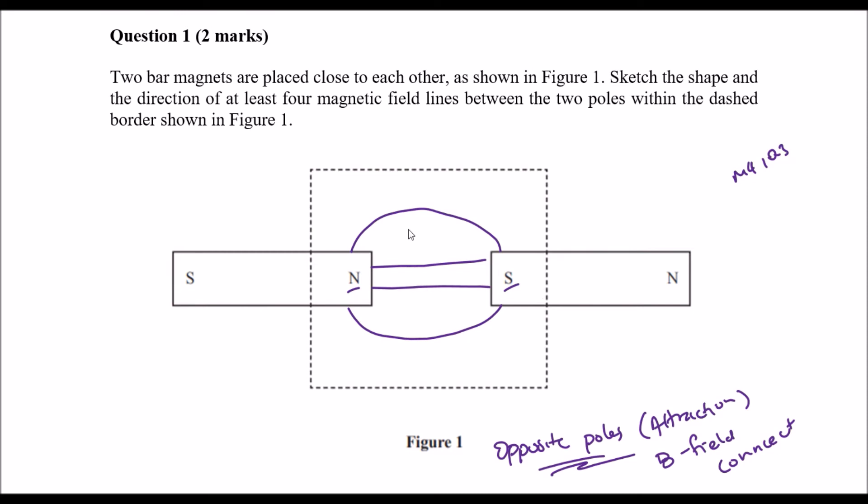The next one is to work out which direction the magnetic field goes. It always goes from North to South, so it goes in this way. That is essentially how you represent magnetic field lines for two oppositely charged poles.